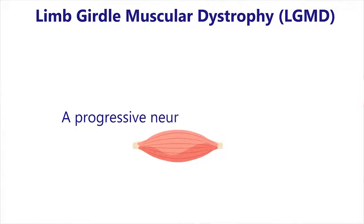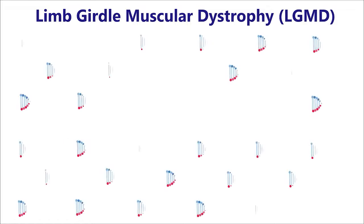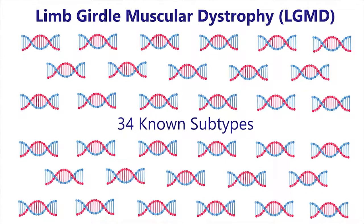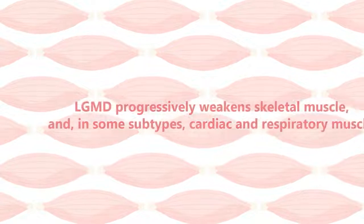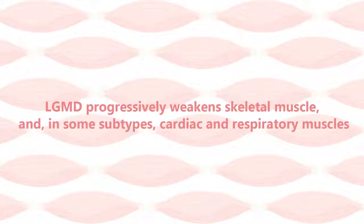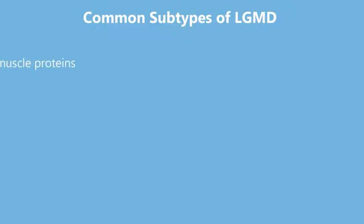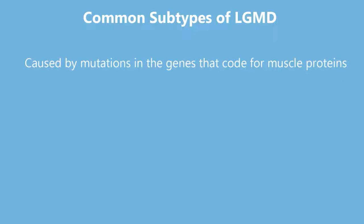Limb-girdle muscular dystrophy, or LGMD, is a progressive neuromuscular condition with 34 known subtypes, each arising from different genetic mutations. LGMD progressively weakens skeletal muscle and, in some subtypes, cardiac and respiratory muscles.